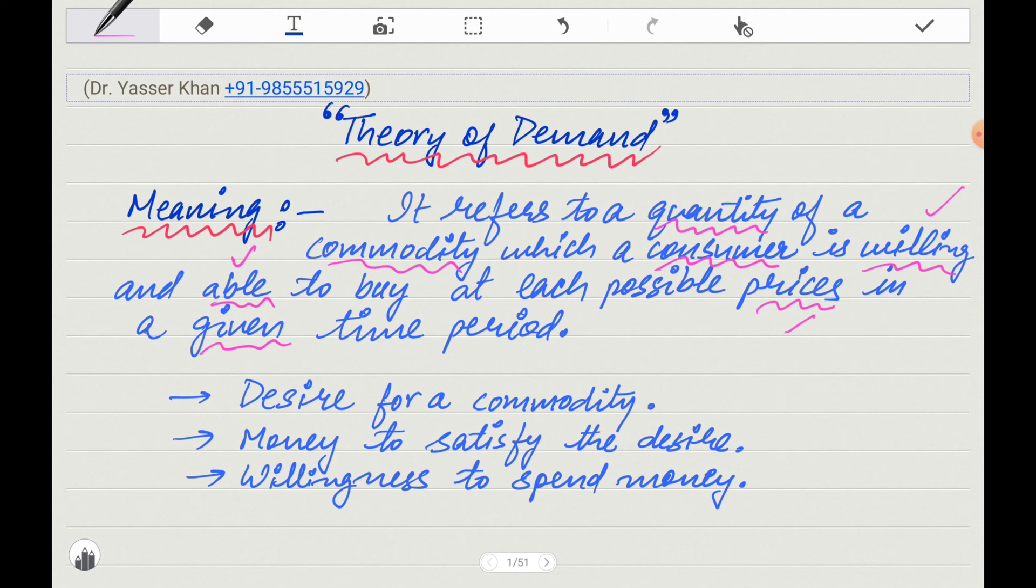If you buy something at a given time, you are willing to buy and you also have money. That is called a given time period. That is called Demand.